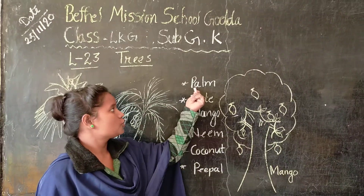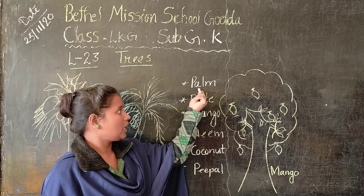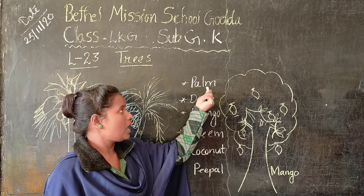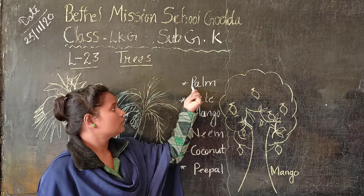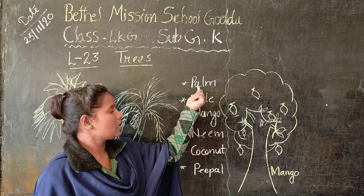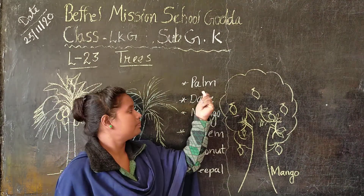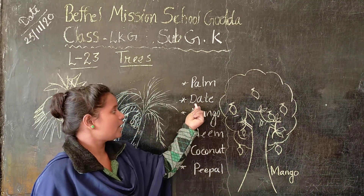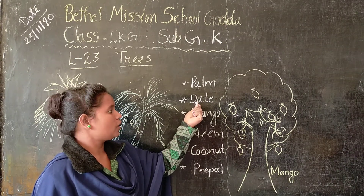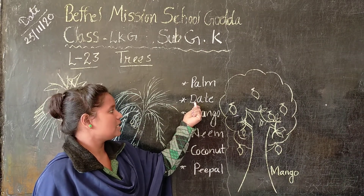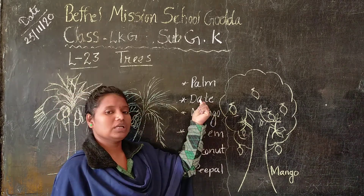So the spelling of palm is P-A-L-M. Palm. Next one, date. The spelling of date is D-A-T-E.